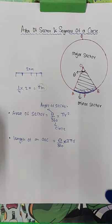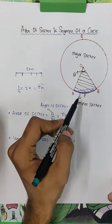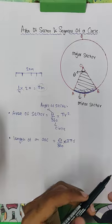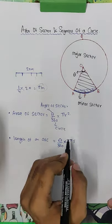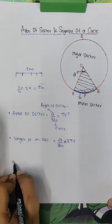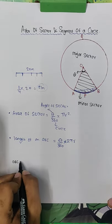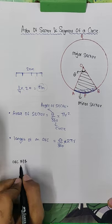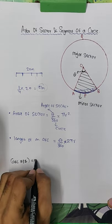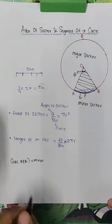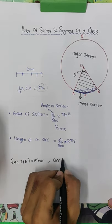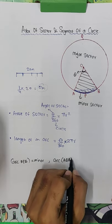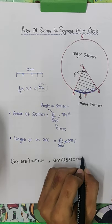You don't need to find out the length repeatedly. You know the APB formula, you found APB. Then for AQB don't use the formula again. Arc APB is your minor arc, and arc AQB is nothing but your major arc.